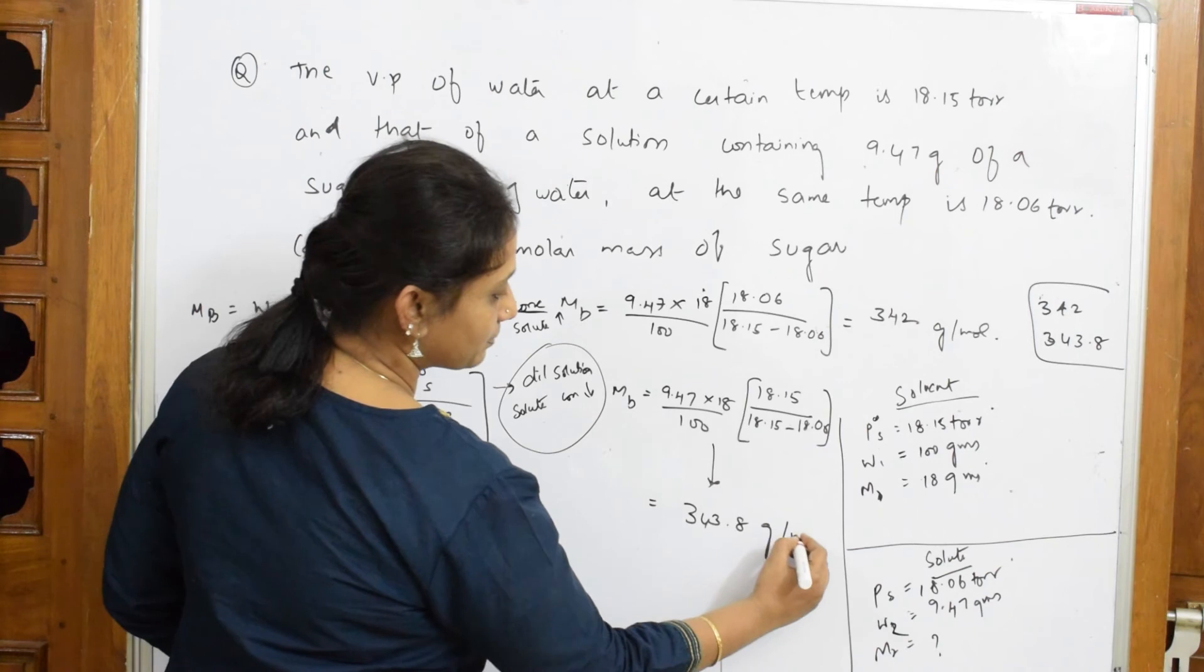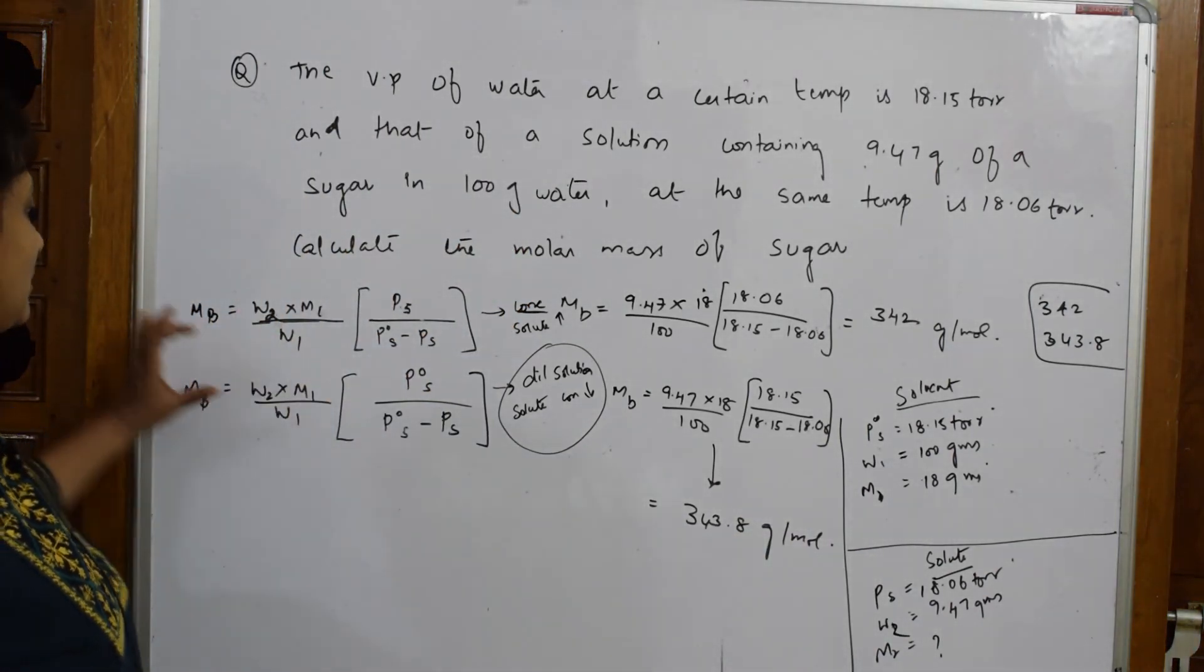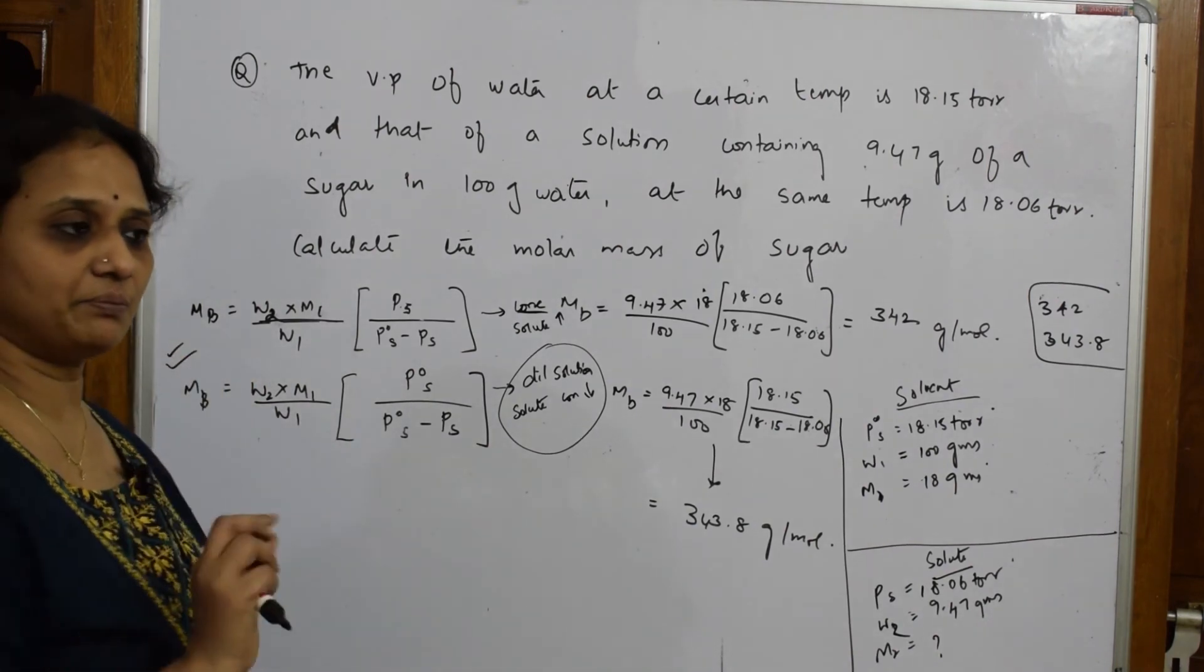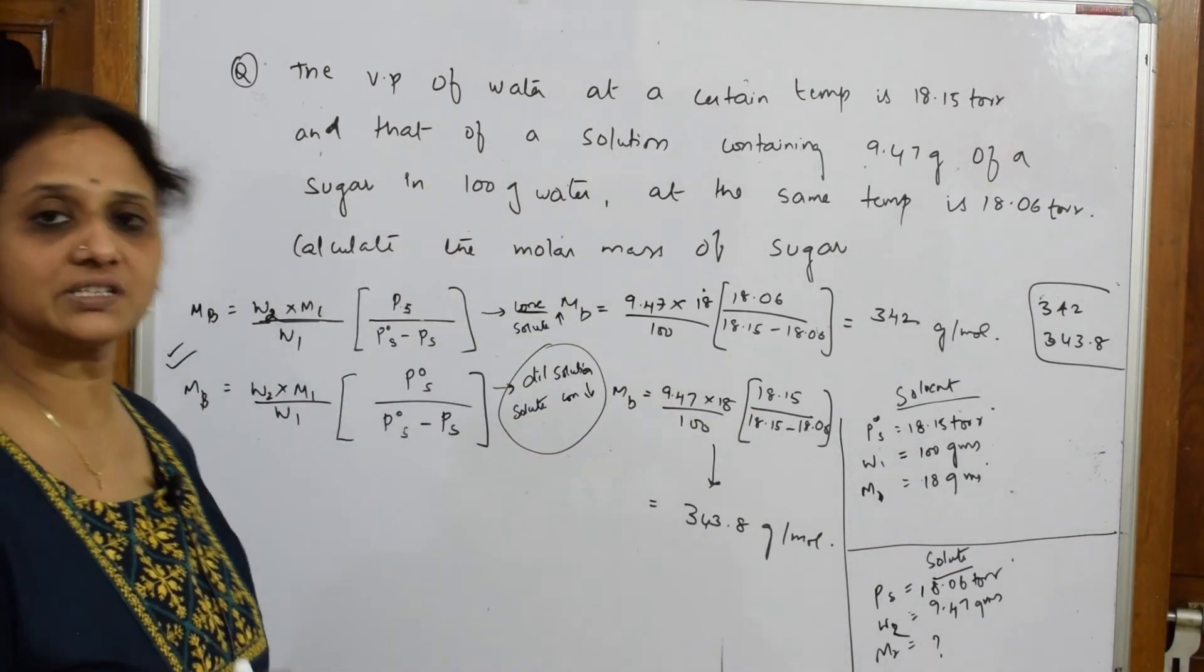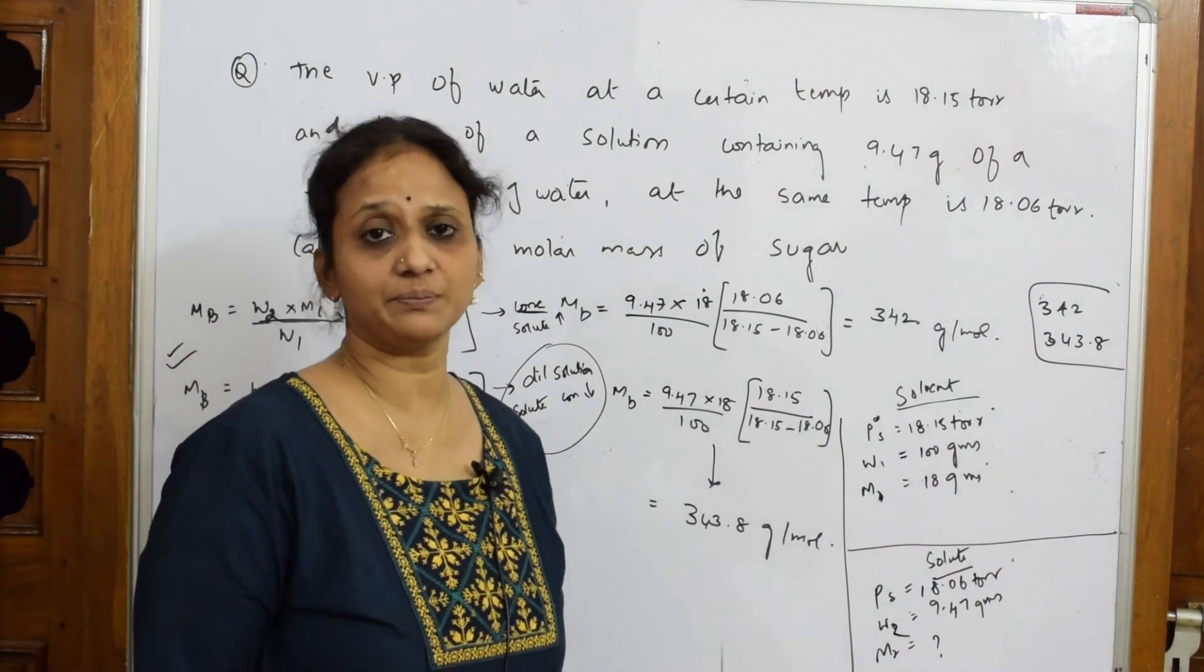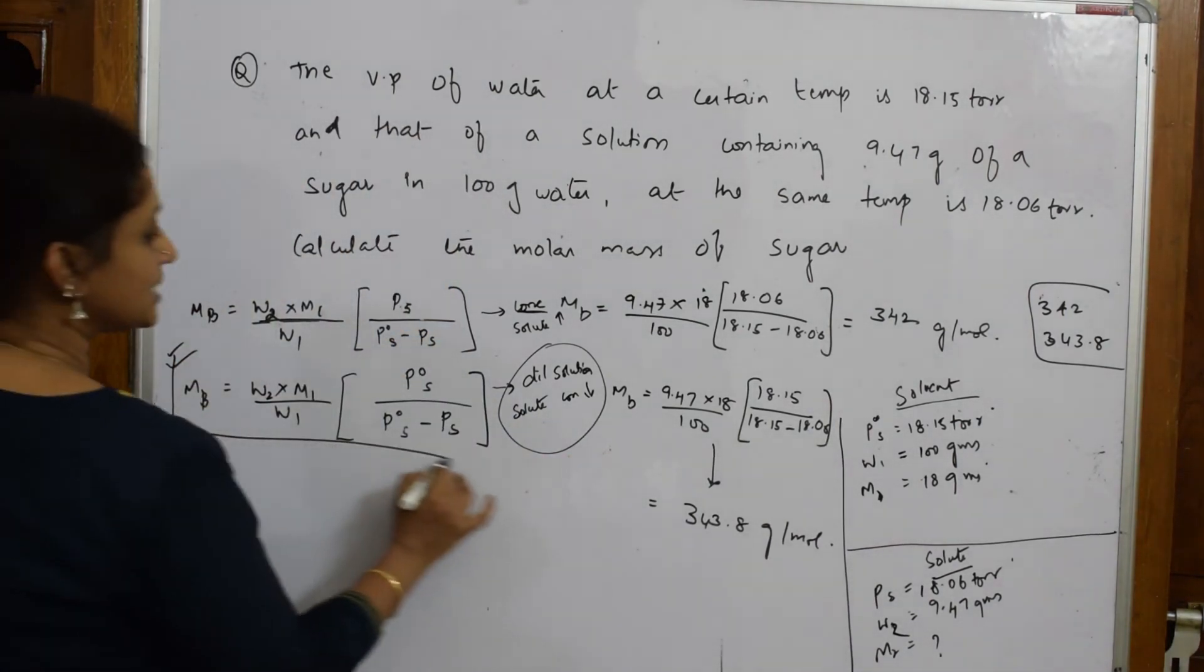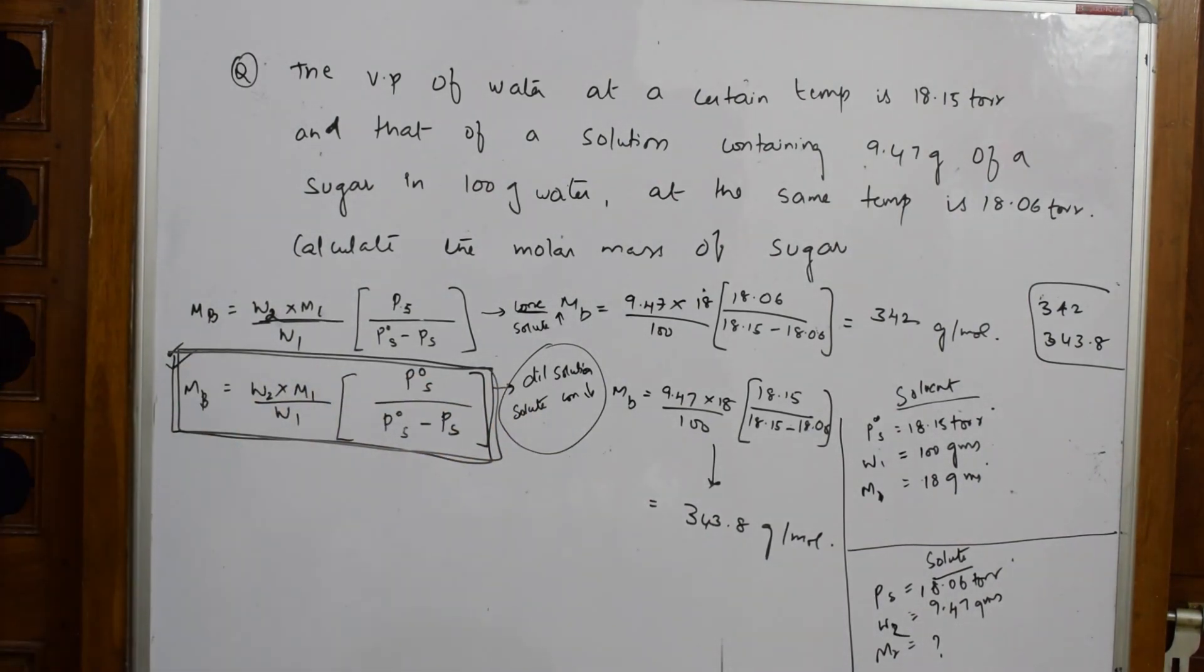This is how you're going to do it. Why did I do this numerical? I wanted to show you this is a formula which you can directly use. Don't get confused. Remember this formula: write the data, substitute in the sum, and you'll get the answer. But units are important—molecular weight is grams per mole. Try to memorize this formula because this is very, very important.